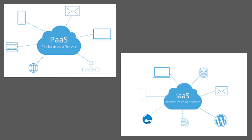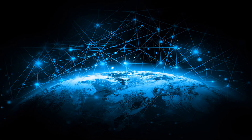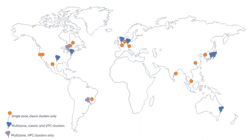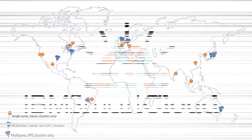With IBM's cloud infrastructure, organizations can deploy and access virtualized IT resources from anywhere at any time. It is globally deployed across data centers around the world — IBM deploys workloads in over 60 data centers, across six regions and 18 availability zones.